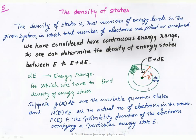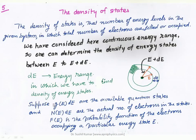In this interval we have to find the number of electrons and the number of states in which these free electrons are filled. dE is the energy range in which we find the density of energy states. Suppose G(E)dE are the available quantum states — the notation for density of states is G(E). The total number of energy states is G(E)dE, and N(E)dE are the actual number of electrons in these states. F(E) is the probability function of electrons occupying a particular energy state.